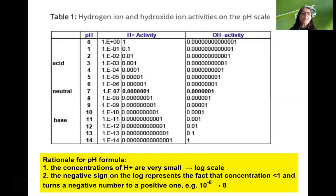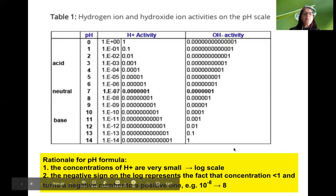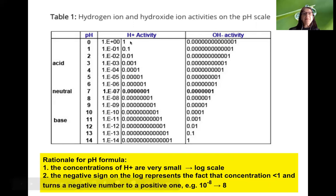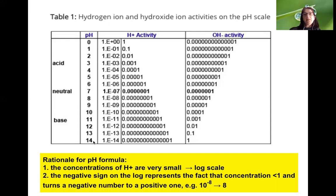This table helps you understand it. A pH of 0 means you have only hydrogen ions and no hydroxyl ions. A pH of 1 means you have 0.1 molar concentration of hydrogen ions, and a very small hydroxyl ion concentration, and so on. The lower the hydrogen ion concentration becomes, the higher the pH — it really is opposite day.